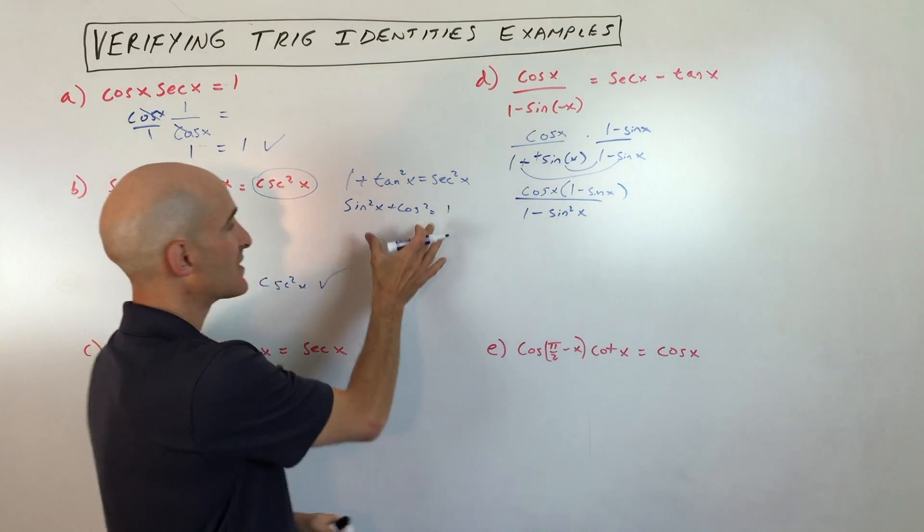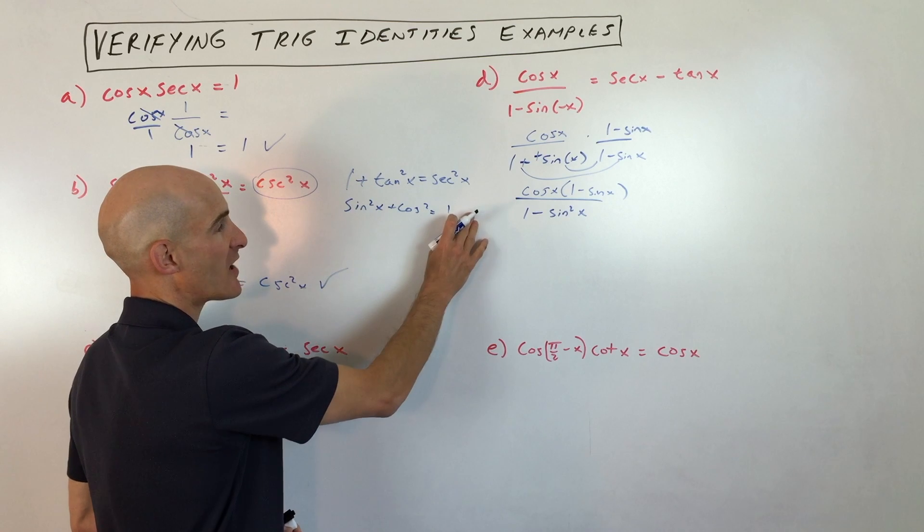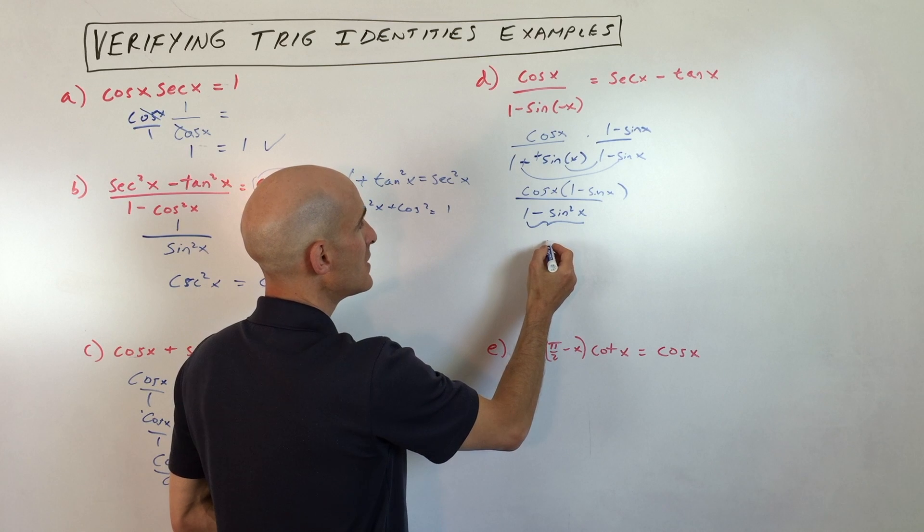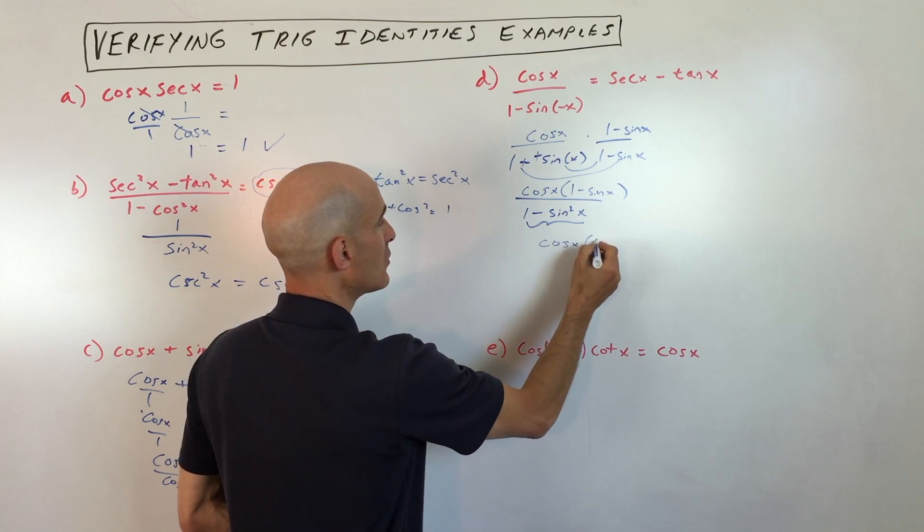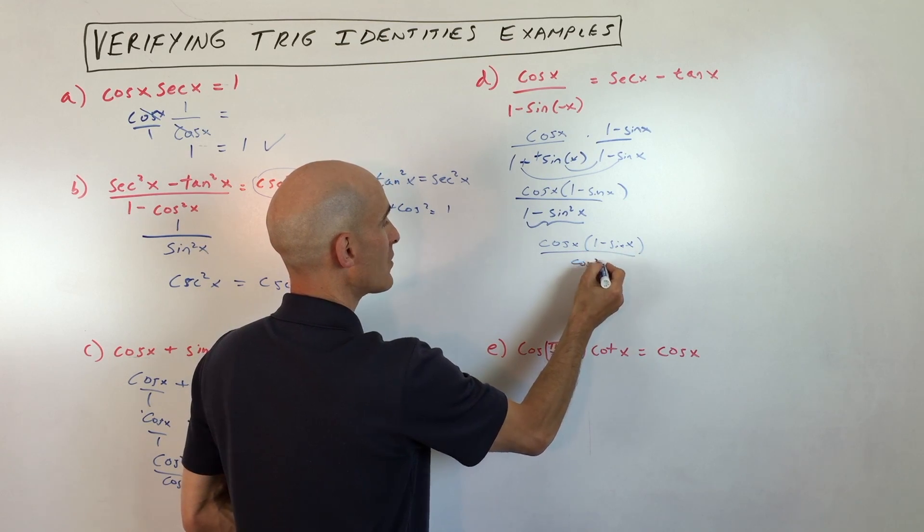1 minus sine squared x, again, here comes that Pythagorean trig identity again. And 1 minus sine squared of x, I'm subtracting sine squared from both sides. That equals cosine squared, cosine squared. So we have cosine x times 1 minus sine x over cosine squared x. One of these cosines cancels with one of these.